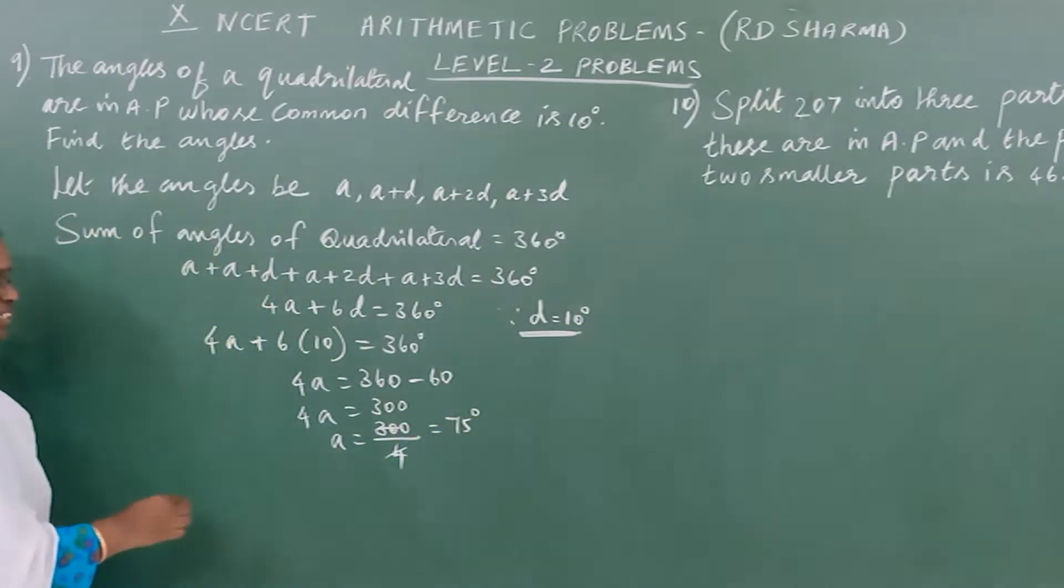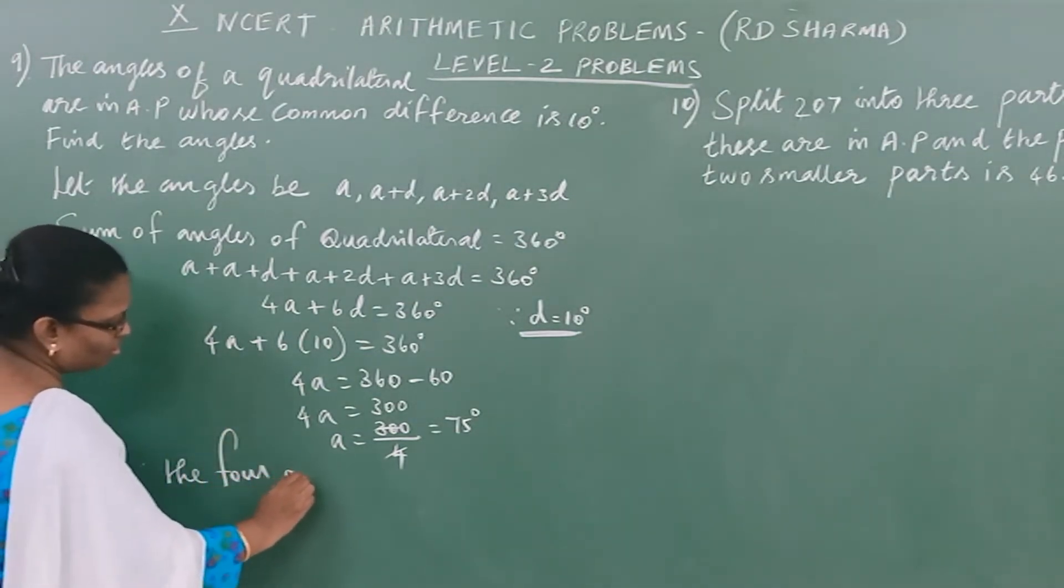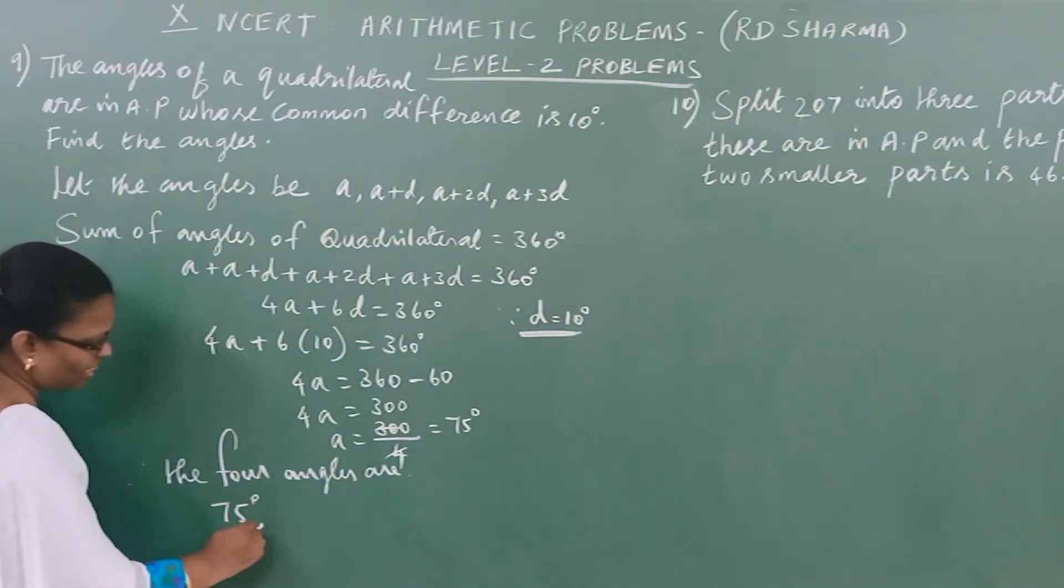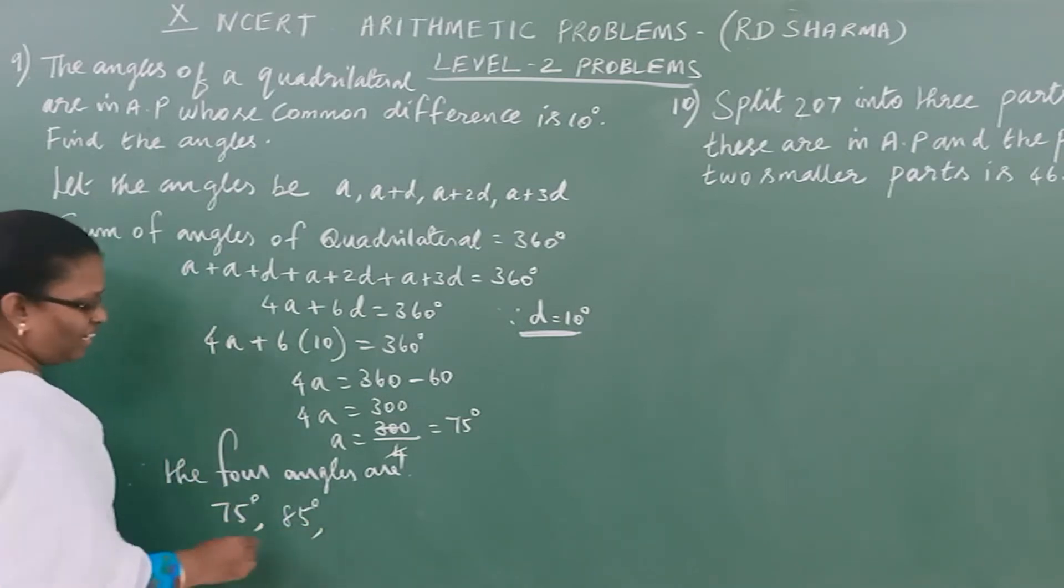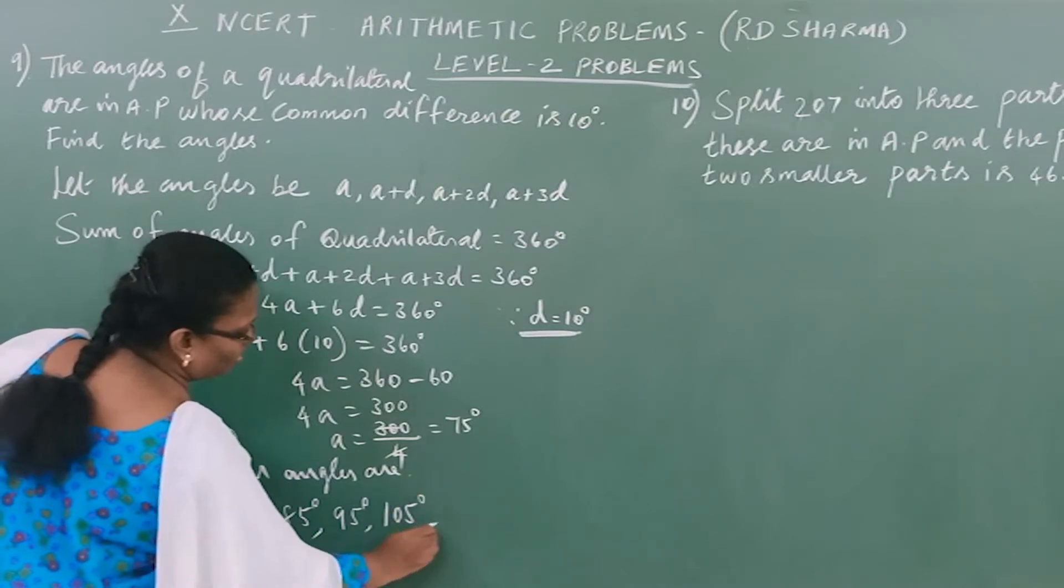A is the first angle. Therefore the four angles are: first angle 75°, second angle 85°, third angle 95°, and fourth angle 105°.